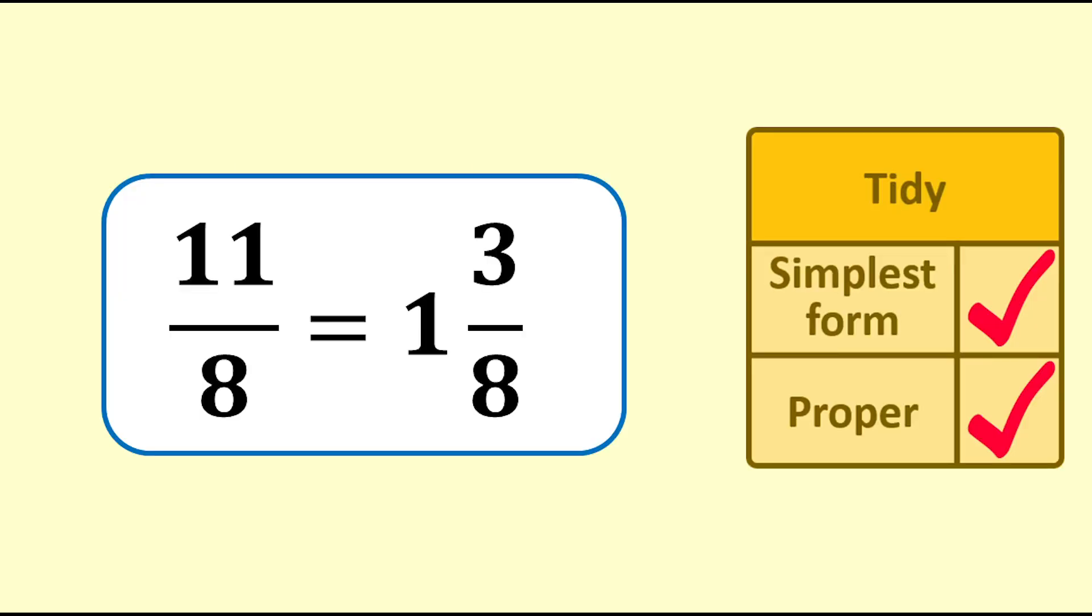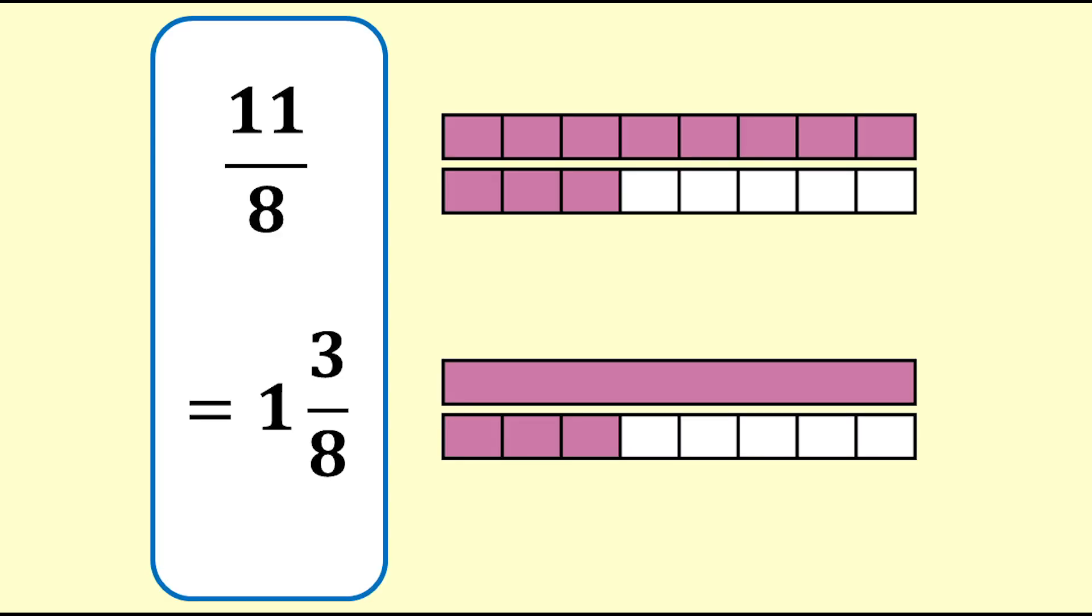8 eighths makes 1 whole and there are 3 eighths left over, so the answer is 1 and 3 eighths. 11 eighths equals 1 and 3 eighths.